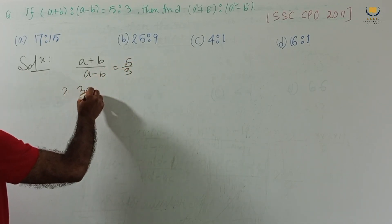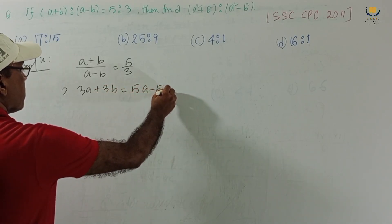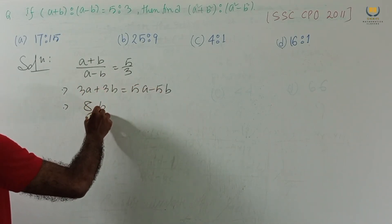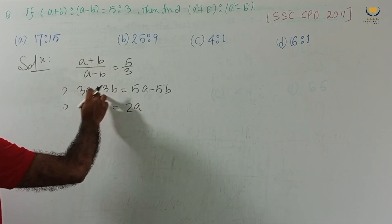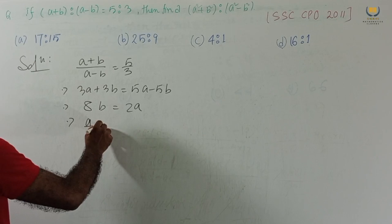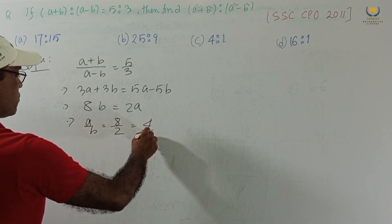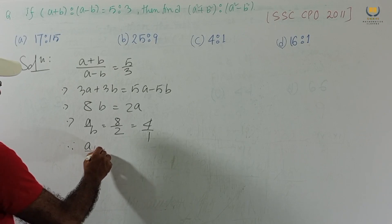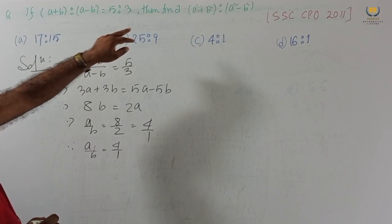3A taking this side, 5B this side. So 8B equal to 2A. This is taking right hand side. And A/B equal to 8/2. This is 4 is to 1. Therefore, A is to B or we can write A/B equal to 4/1.